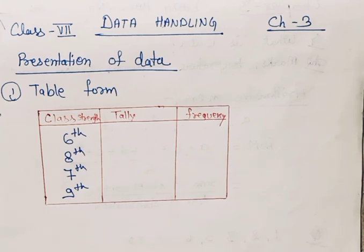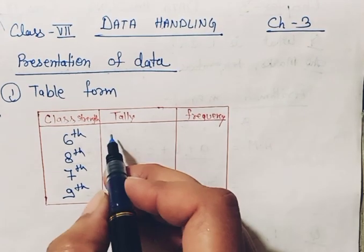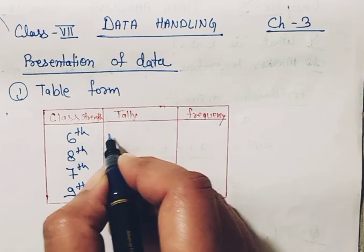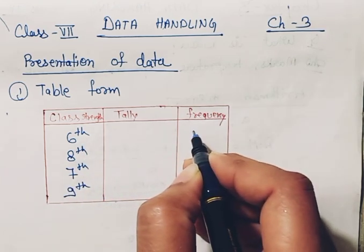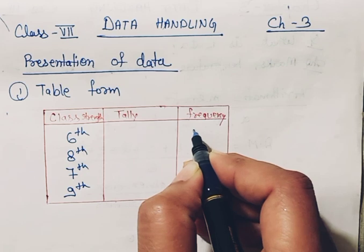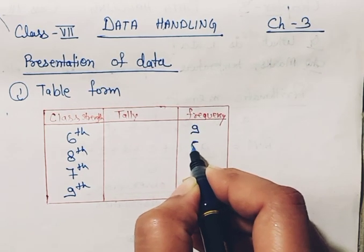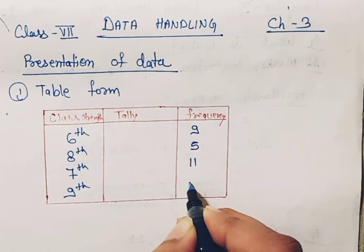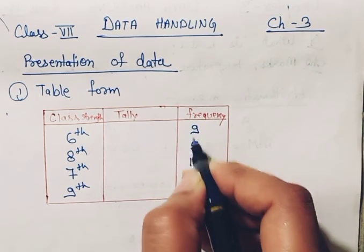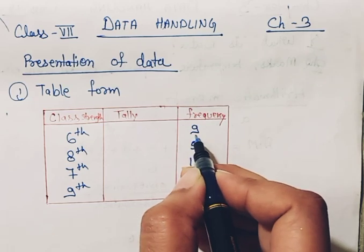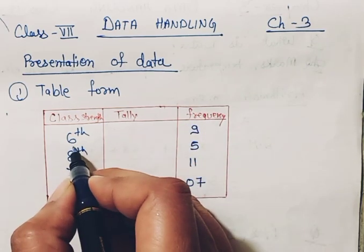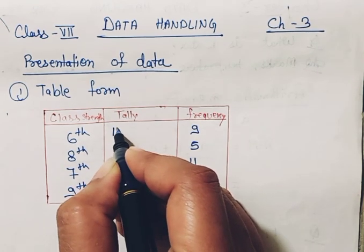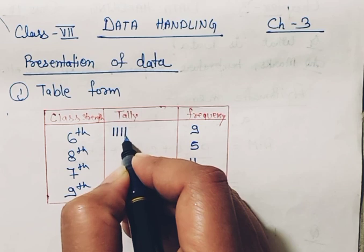Starting from class 6th, I'm going to draw the tally diagram. First, I'm writing the frequency here so it will be easier. Here are some numbers given - first is number 9, which is the frequency of class 6th. So I'm going to represent it by a tally: 1, 2, 3, 4, and 5.